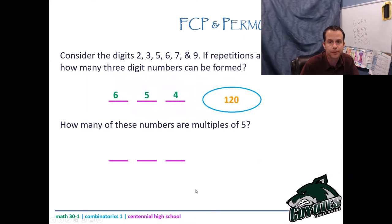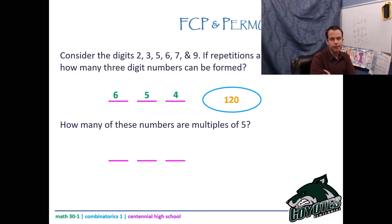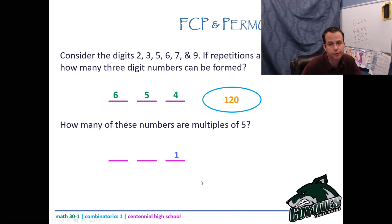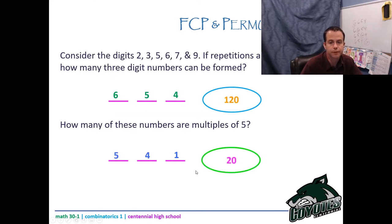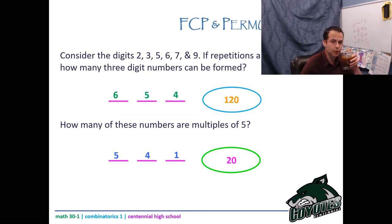How many are multiples of five? To be a multiple of five, I need to end in five or zero — zero is not in my available digits, so only one option for the back. I've used a number, leaving five options for the front and four for the second: 5×4×1 = 20.